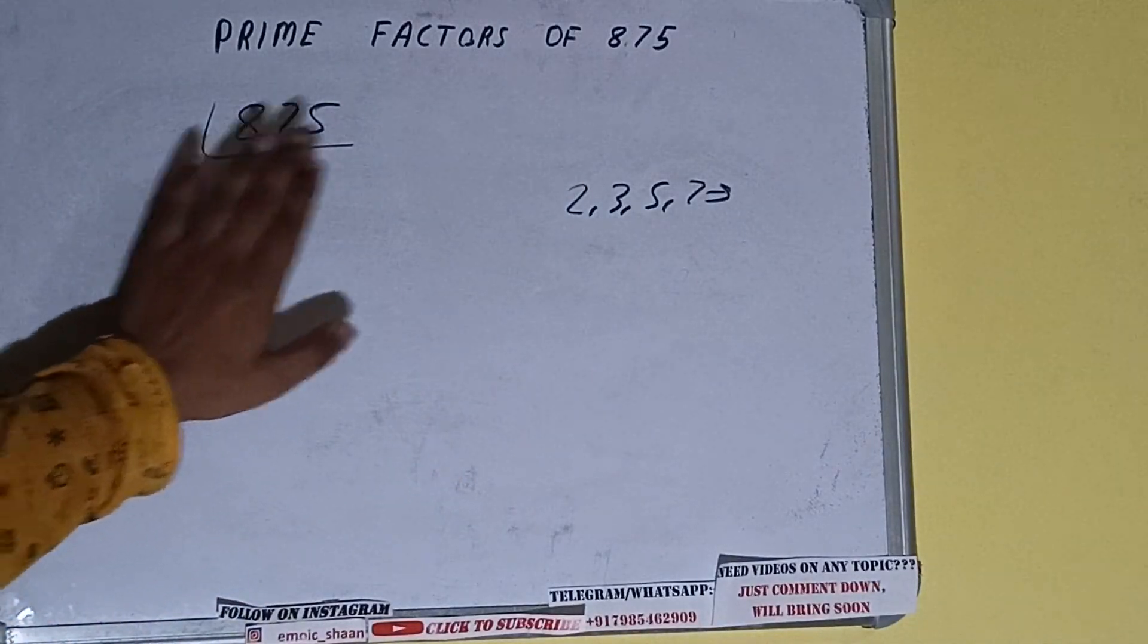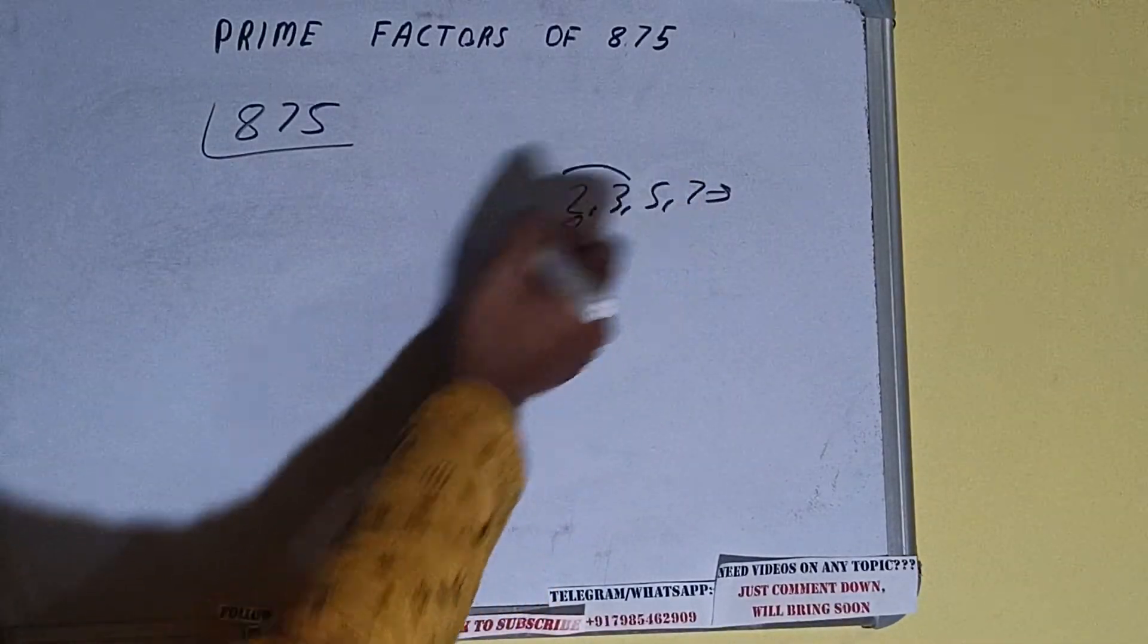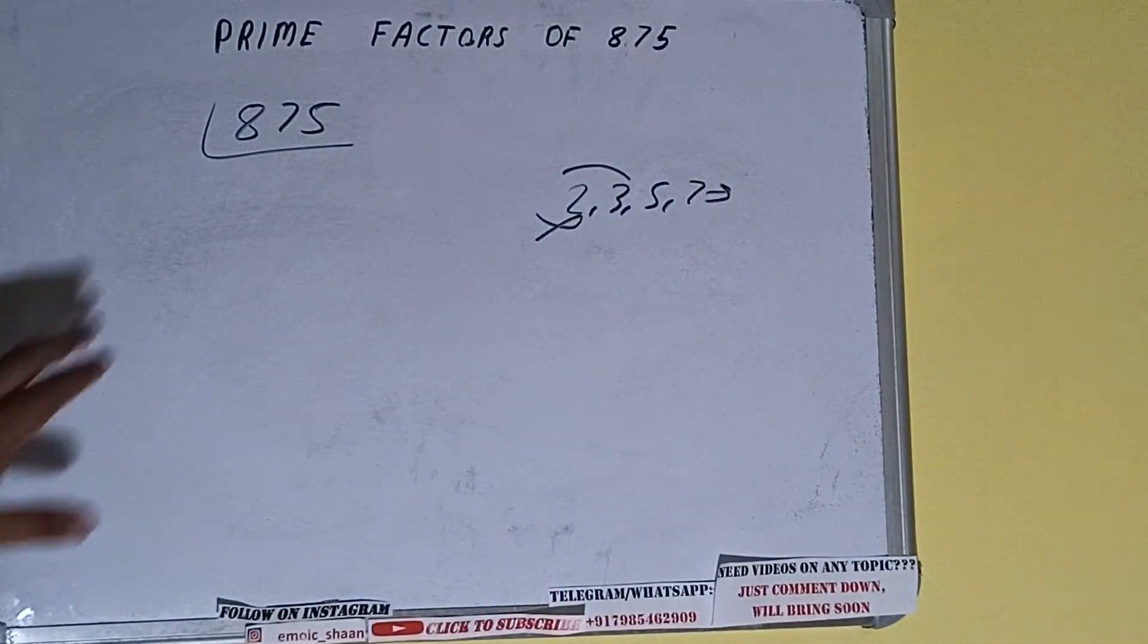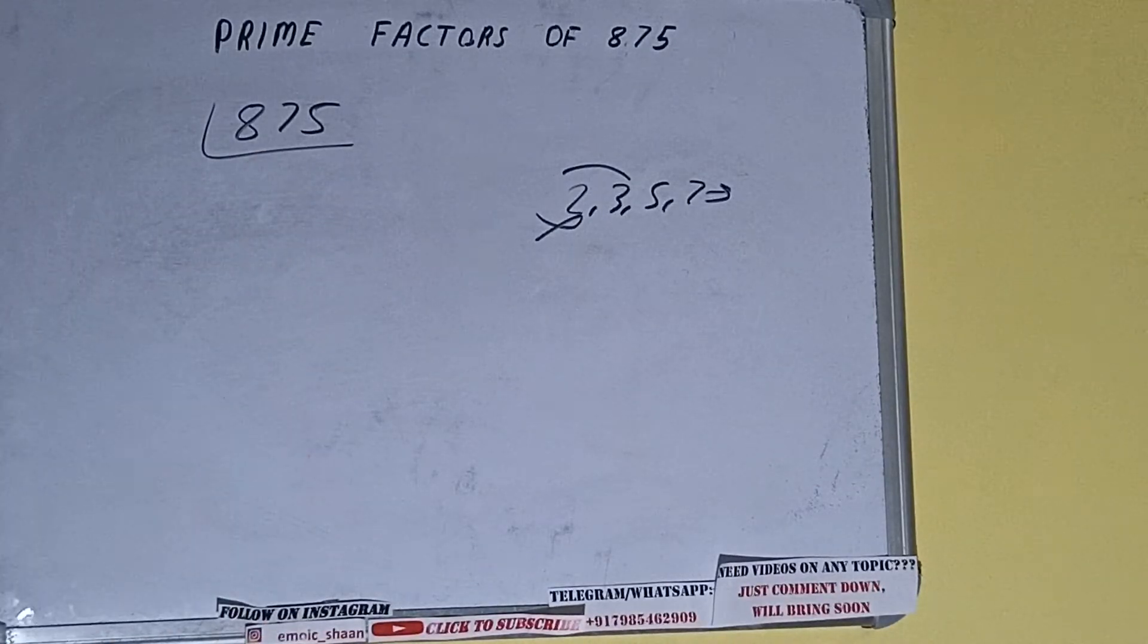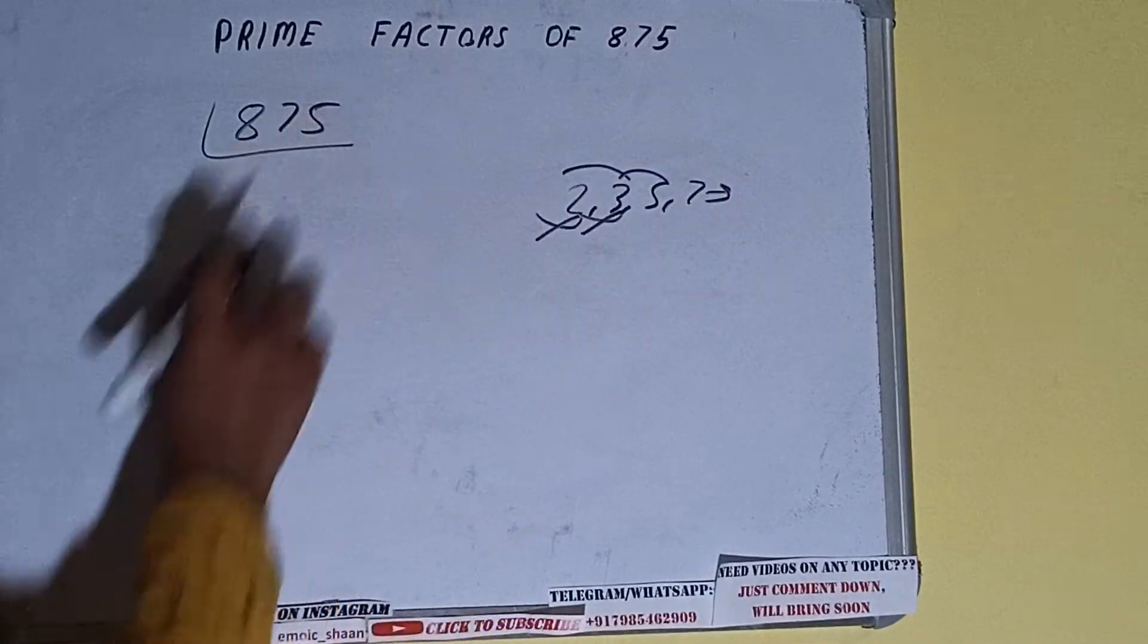Is the number 875 divisible by 2? It is not, because the number is odd. So we'll check with the next lowest prime number, that is 3. It is not divisible by 3 also. Let's check with 5. The last digit is 5, so it is divisible by 5.